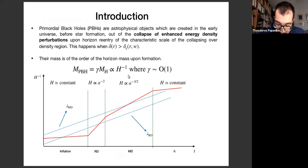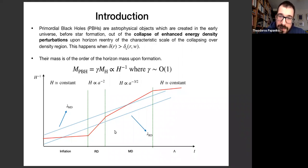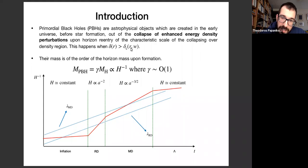Let me introduce primordial black holes. From now on I will call them PBHs, which is commonly used in the community. PBHs are astrophysical objects formed in the early universe, before star formation — for this reason we call them primordial. They are formed out of the collapse of enhanced energy density perturbations when the characteristic scale of the collapsing over-density region reenters the Hubble radius. This happens mainly when the density of the collapsing region is bigger than the critical threshold, which depends on the equation of state of the universe at formation time, on the characteristic scale of the collapsing region, as well as on the details of the surroundings.